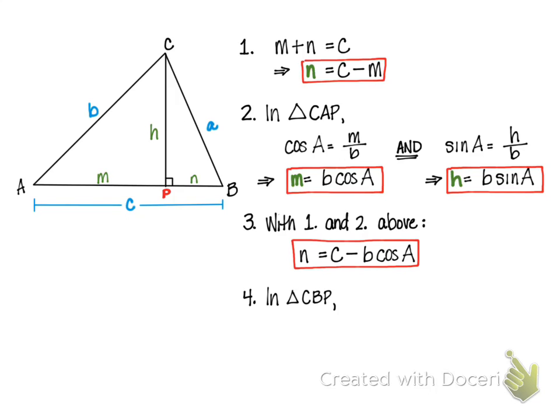Next I'm going to look at the other right triangle, CBP, and not use right triangle trig, but use the Pythagorean theorem. The Pythagorean theorem is that the hypotenuse squared is equal to the sum of the two legs squared.